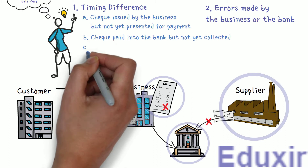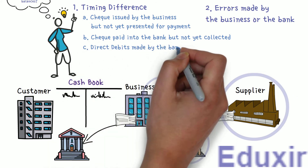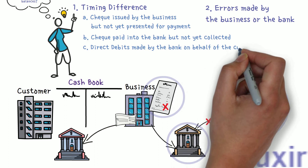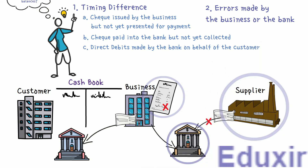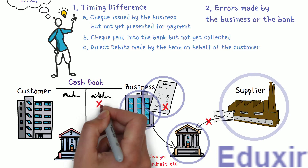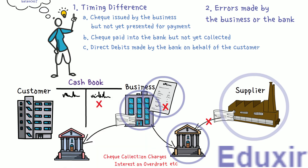The next reason is direct debits made by the bank on behalf of the customer. Sometimes the bank deducts amounts for various services from the business bank account, such as check collection charges or interest on overdraft. The business will not be aware of these deductions until the bank statement is received, so they will not be recorded in the business cashbook, causing a difference in balances.